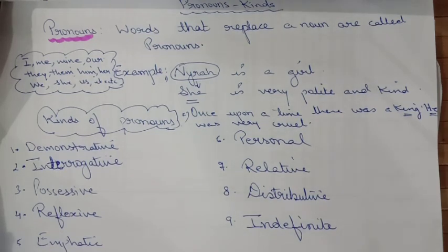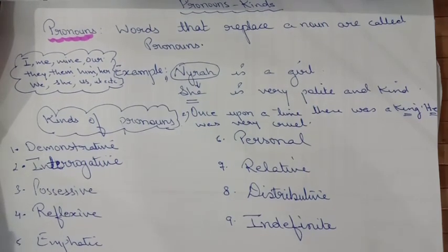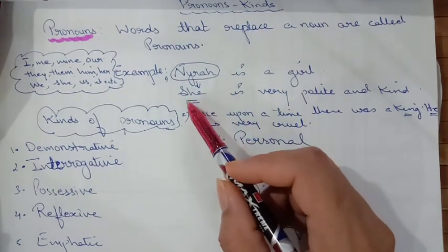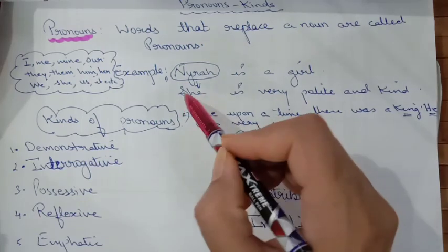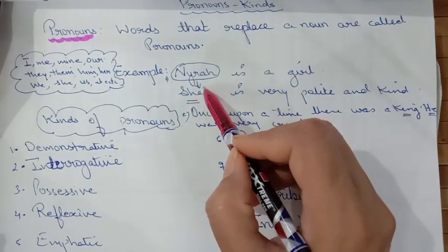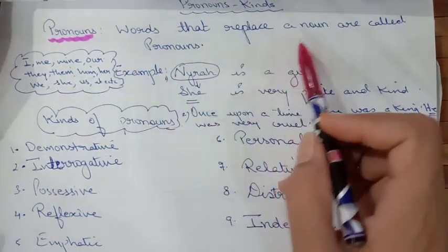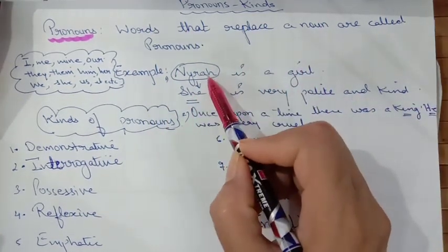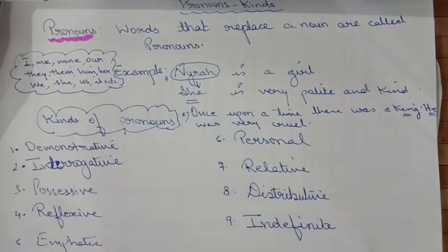Suppose you say that Naira is a girl — you're talking about a girl named Naira. The next time when you're going to talk about the same girl, as she's a girl, you replace this word with 'she.' This word is a pronoun. A word that replaces a noun — this is a noun and this is the word which is replacing it, so this is known as a pronoun.